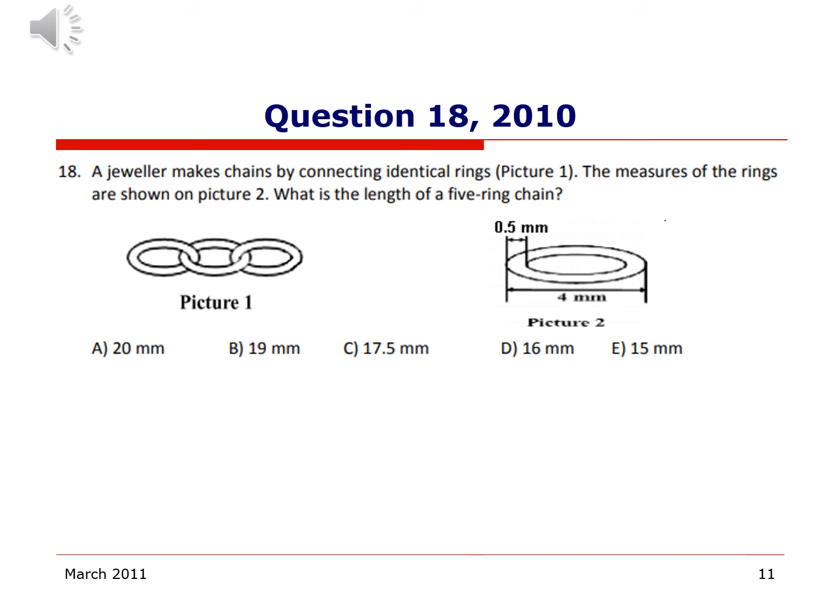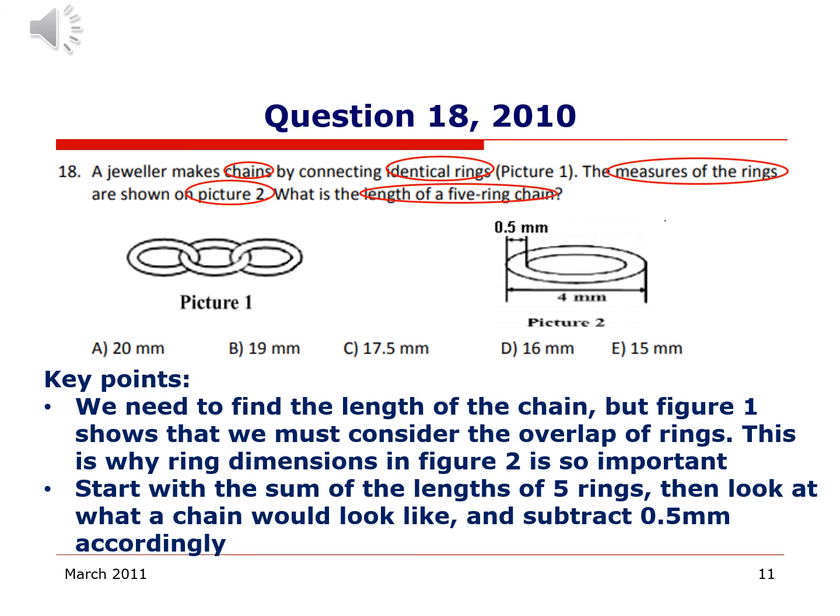Let's finish with a question about the length of jewelry. A jeweler makes chains by connecting identical rings seen in picture one. The measure of the rings are shown in picture two. We want to know what the length of a five ring chain is. We need to find the length of a chain, but figure one shows that we must consider the overlap of the rings. When you consider a five length chain, it's not just going to be the length of five ring segments altogether. That's why we need to consider the dimensions of the ring in figure two. We're going to start with the idea of the total length of five rings, and then we're going to look at the picture of a five ring chain and subtract half millimeters as appropriate to find the full length of the chain.